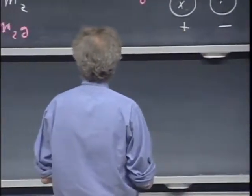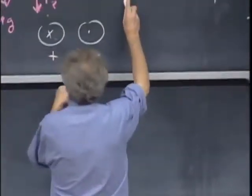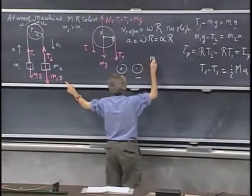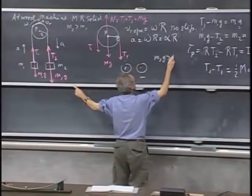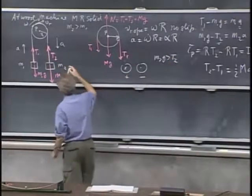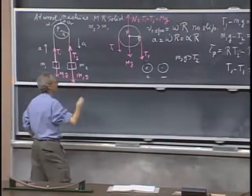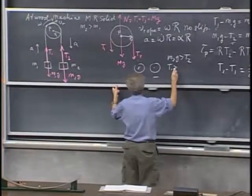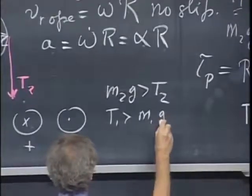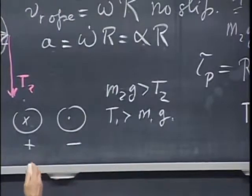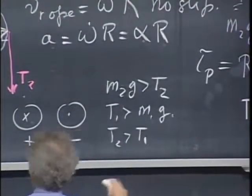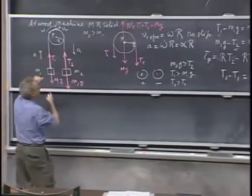What you should do is make sure that m2 g is larger than T2. That's a must, otherwise it's not being accelerated down. You should also check that T1 comes out larger than m1 g. That's also a must. And you should also check that T2 be larger than T1, otherwise the pulley wouldn't rotate in clockwise direction.